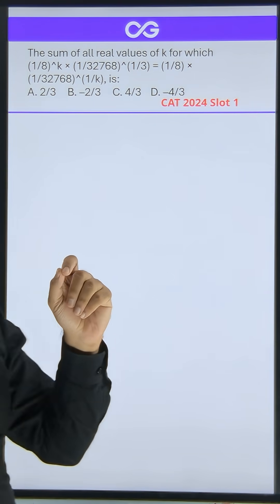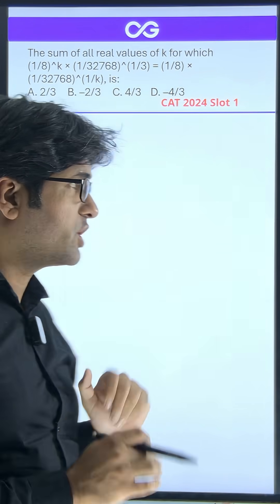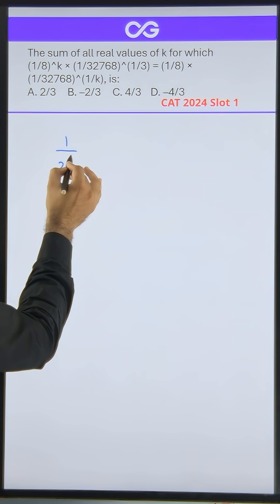So here, 32,768—if you are comfortable calling it 2 to the power 15, the question becomes extremely easy. If you simplify this question, 1 by 8 to power k, this is simply 1 by 2 to power 3k.